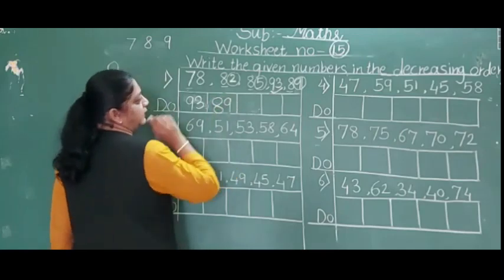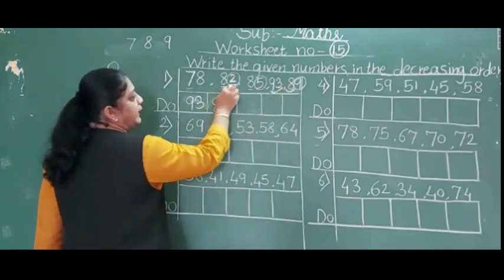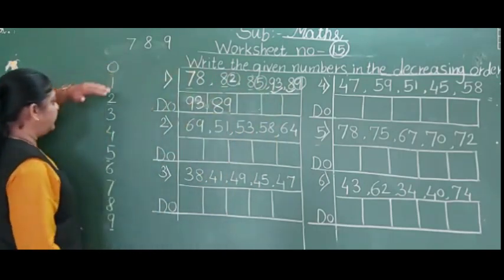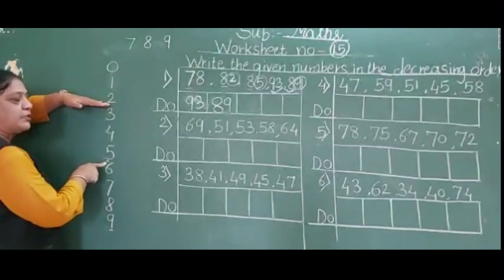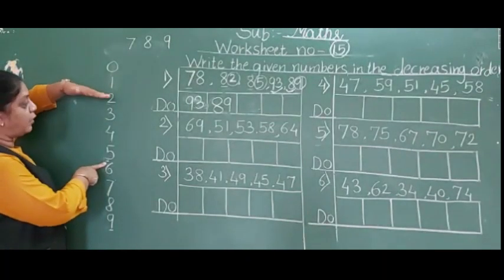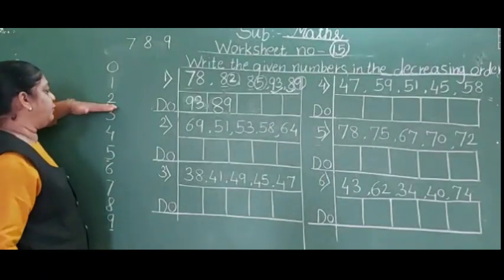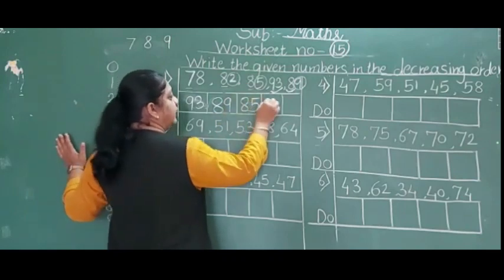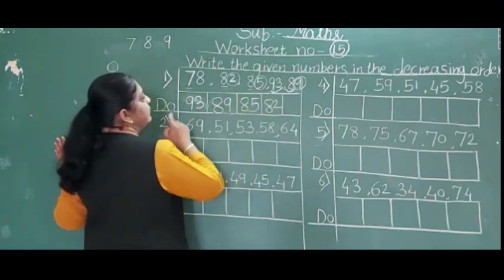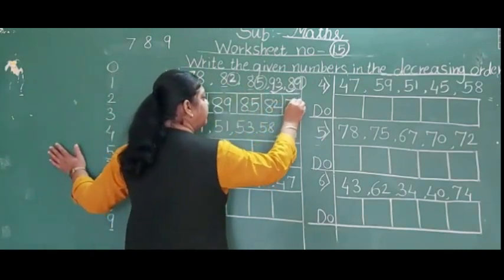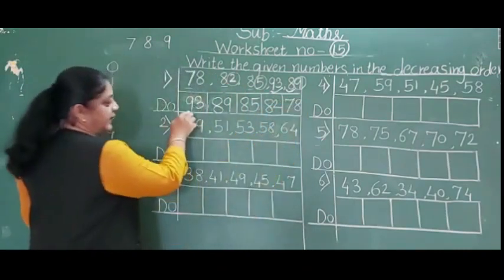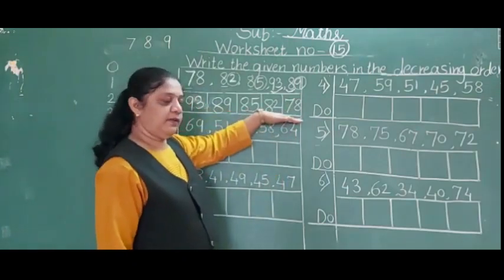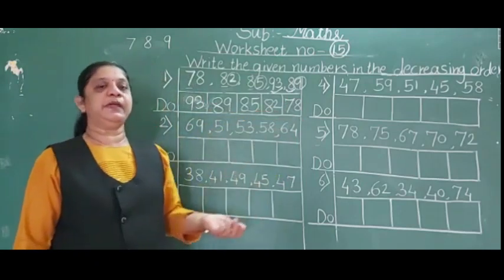89 done. Now 82 or 85: digits 2 and 5. 2 is above — small; 5 is below — big. So 85 comes before 82. Then 82. Afterwards, 78. See: 93 is the big number and 78 is the small number — big to small.